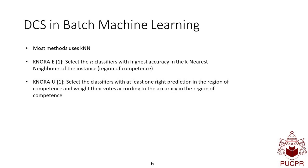Or also the k-NORA union, where you select the classifiers for vote that have at least one right prediction in this region of competence. And then the votes of these learners are weighted by their accuracy in this region of competence.